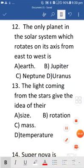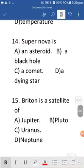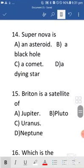Question 13 is the light coming from the stars gives the idea of their, it gives the idea of their D, temperature. Question 14 is supernova is, supernova basically is about what? So it is D, it is about the dying star.